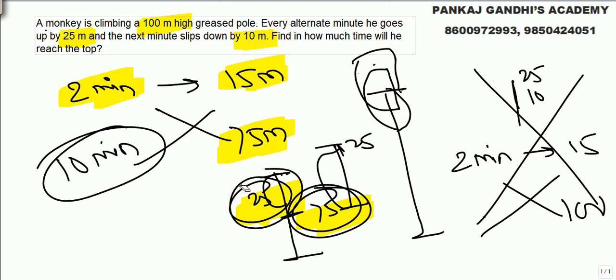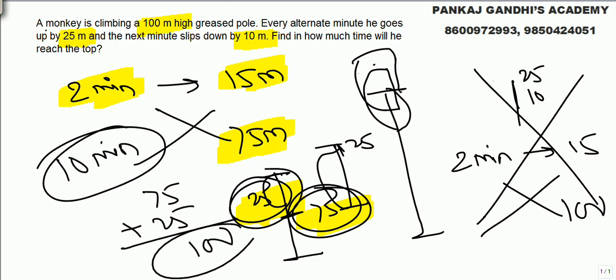Now in the next minute monkey can go up by 25. So answer will be 75 plus 25 equals 100. Answer will be 11 minutes.